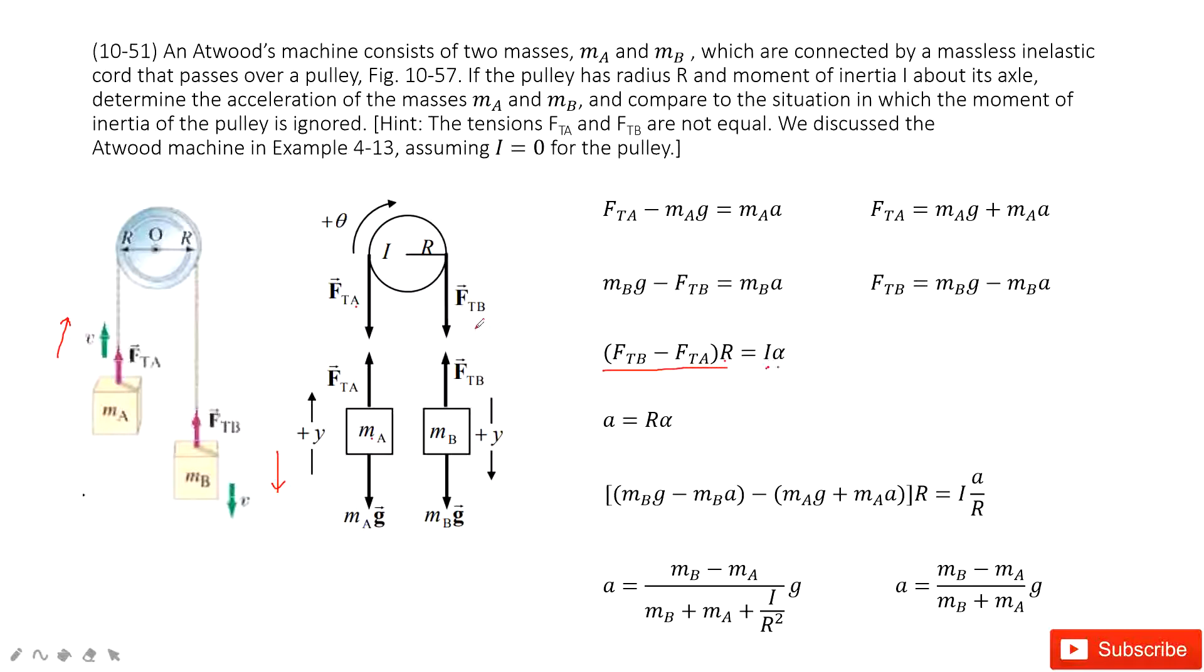This I is the moment of inertia for this pulley. Alpha is angular acceleration. And this angular acceleration has a relationship with linear acceleration. This one, right? The linear acceleration is just the acceleration for the string. So, acceleration a equal to R times alpha.